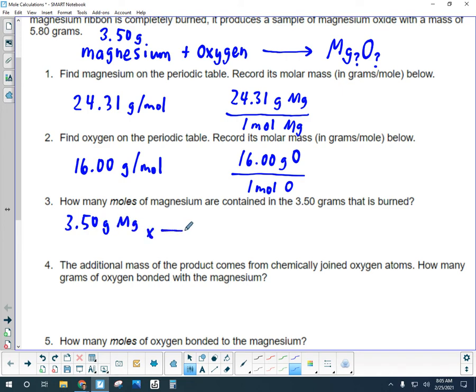And when I set up my conversion factor, I know that I want to cancel grams of magnesium and I'd like to know how many moles of magnesium that is. We can go back here to this fact that one mole of magnesium is 24.31 grams. Notice I've flipped the sense of the conversion factor so that grams of magnesium will cancel. So mathematically, what I'm doing is taking 3.50 times 1 and dividing that by 24.31. Let's go ahead and do that.